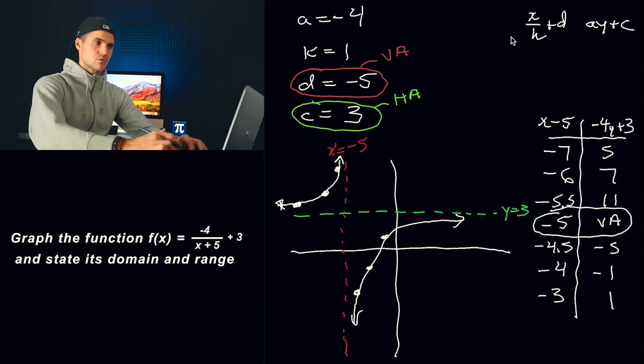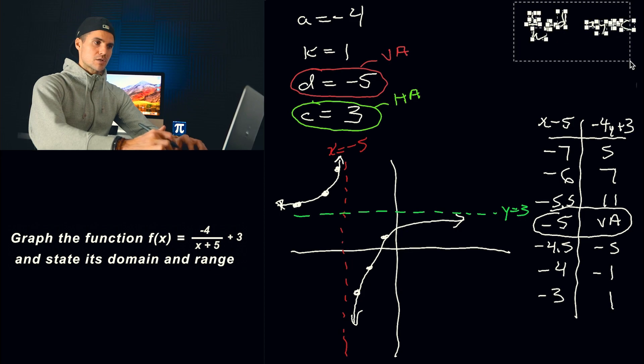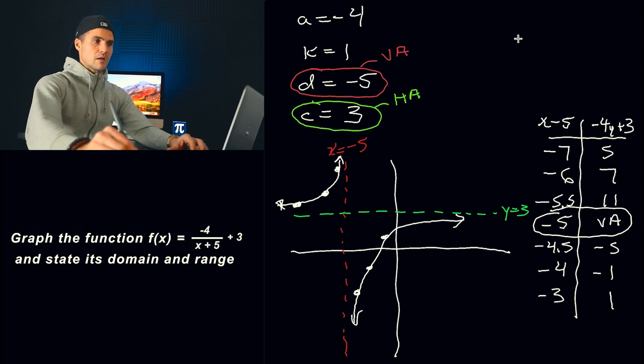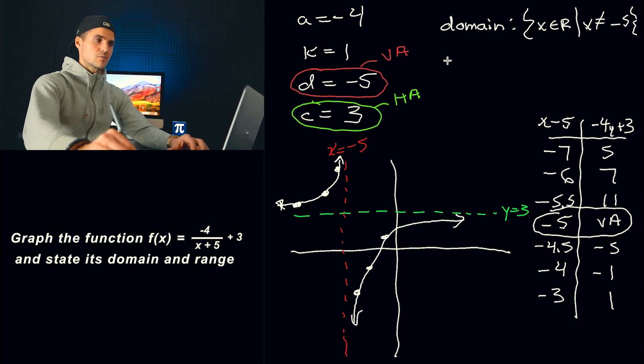So I'm going to, let's erase this transformation formula. Let's do it up here. So the domain of this, well, the domain of any reciprocal function is always what? x∈R, x cannot equal the vertical asymptote, which is happening at negative 5. So that's going to end up being the domain.